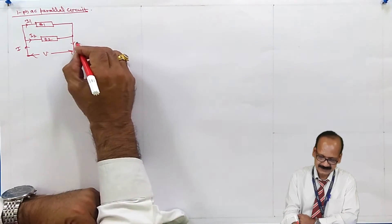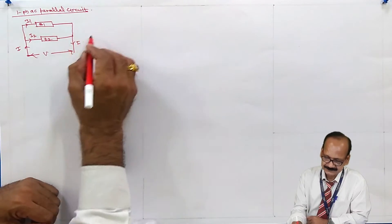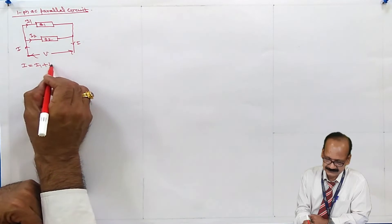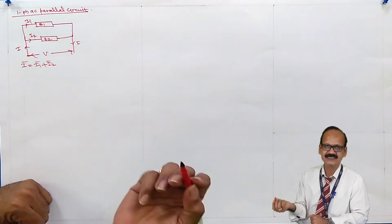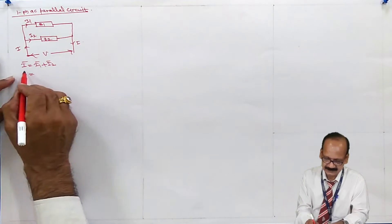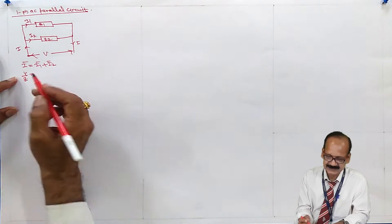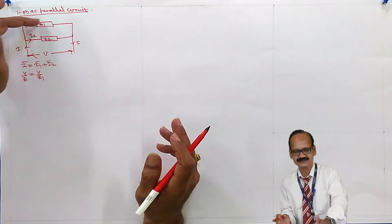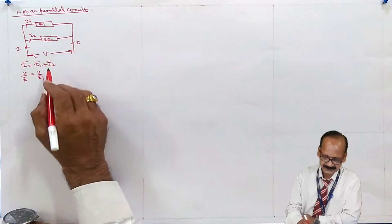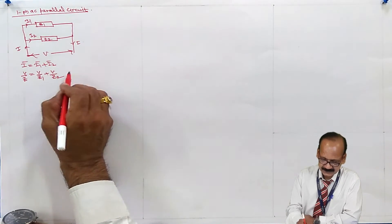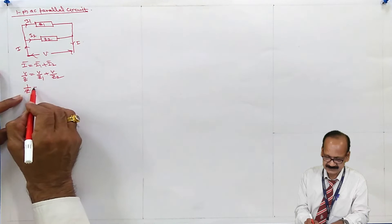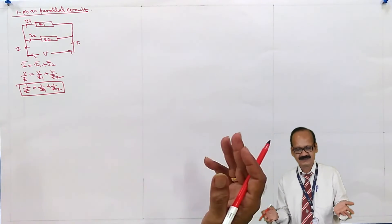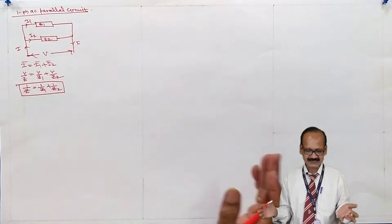The total current I equals I1 plus I2, and this is obviously a phasor sum. I1 equals V divided by Z1. In a parallel circuit, the voltage across each branch remains the same, and therefore I2 equals V divided by Z2. So V is common, and therefore 1 upon Z equals 1 upon Z1 plus 1 upon Z2.